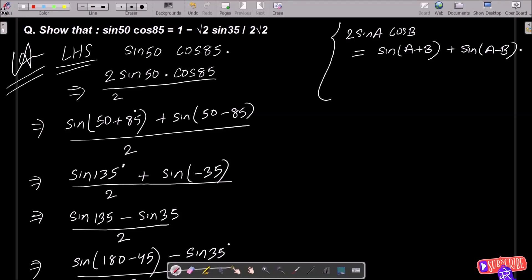In this video lecture, I am going to show that sin 50 into cos 85 equals 1 minus root 2 sin 35 divided by 2 root 2. So this we need to prove that 1 minus root 2 sin 35 divided by 2 root 2.